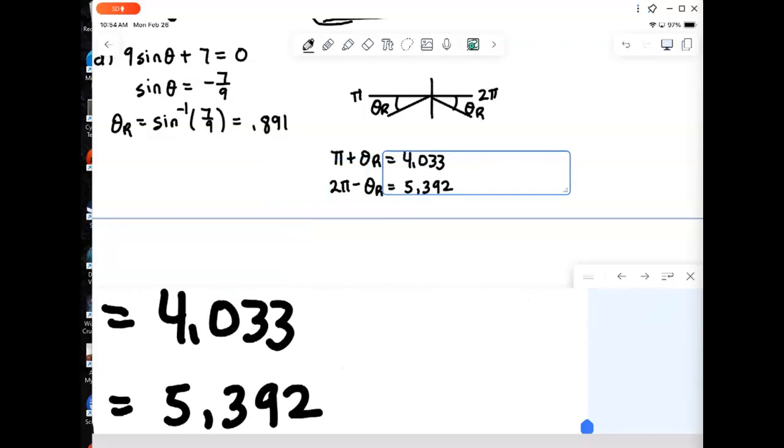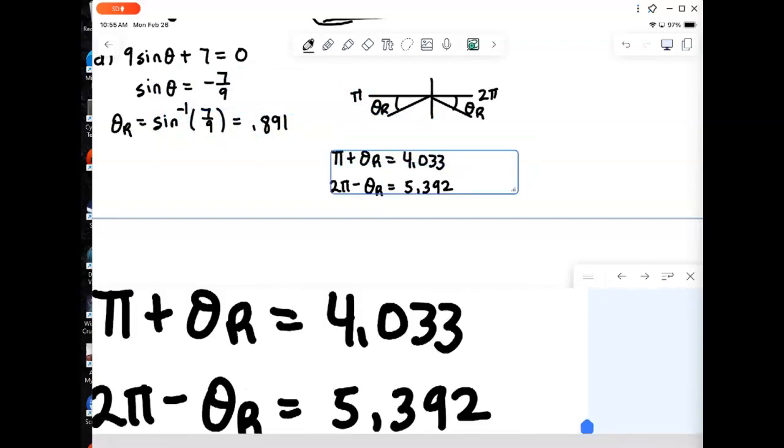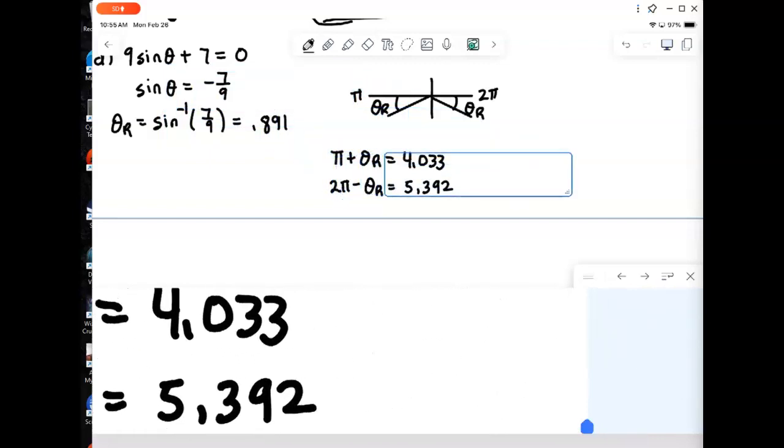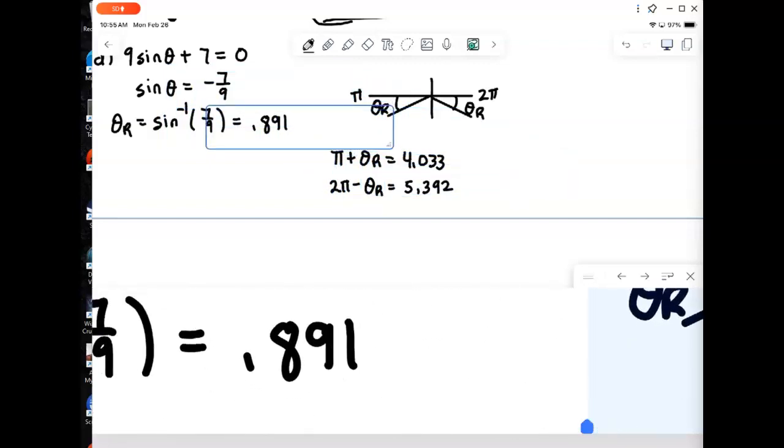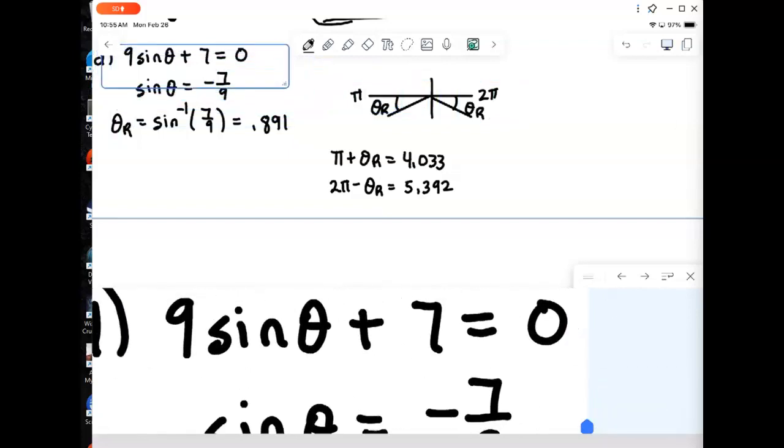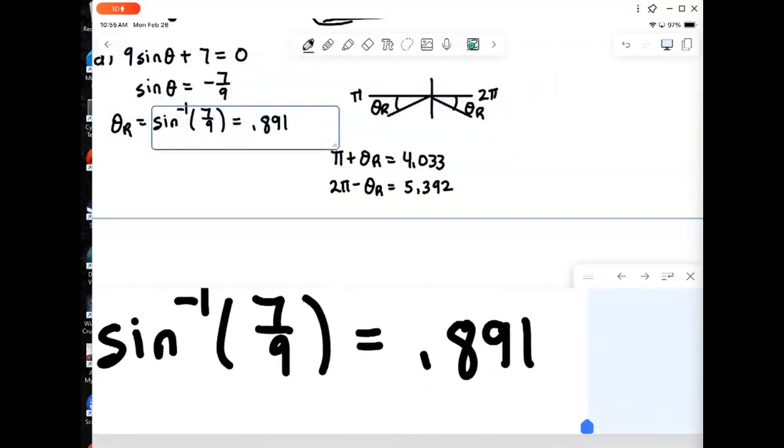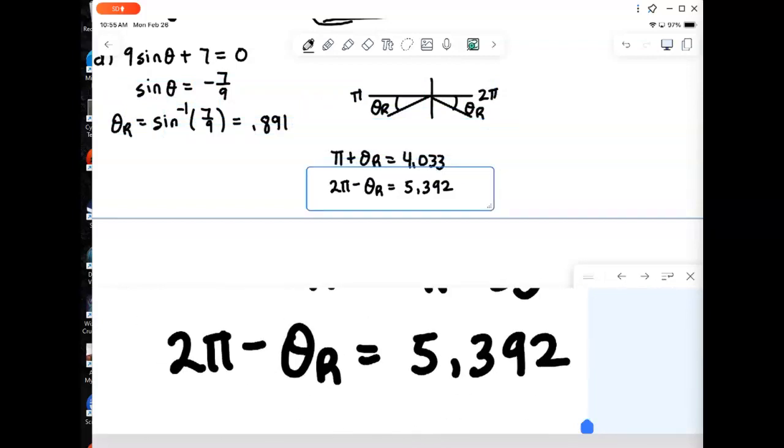Okay. So there we have our two solutions, this time approximate. But if you were to go in a calculator and just do inverse sine of negative 7 ninths, it's only going to give you, well, it's actually not even going to give you either of those answers. It would actually spit out negative 0.891 because of how the inverse sine is set up. Inverse sine is set up to only give answers between negative pi over 2 and pi over 2. So but here we're looking for solutions between 0 and 2 pi. So we're going to find the reference angle and then put it into the appropriate quadrants.